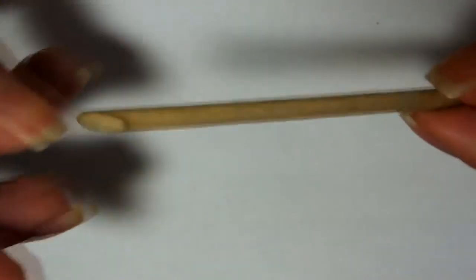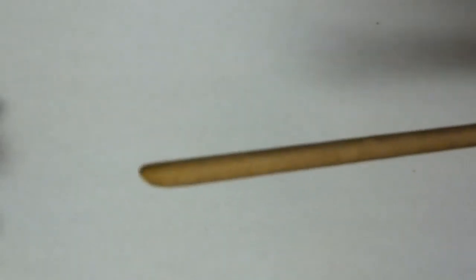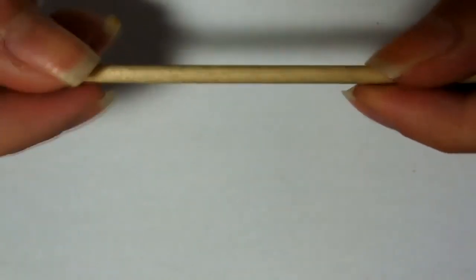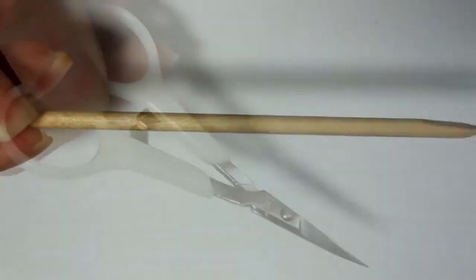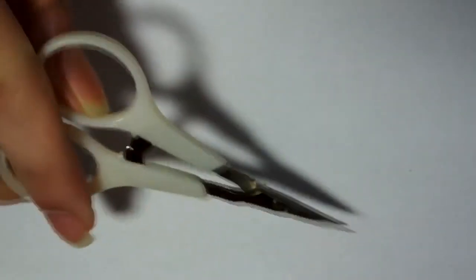Next, you will need an orange stick. Since you can't really disinfect them, you should change them at least once a month. You can find them on eBay for very cheap. You will also need some cuticle scissors.